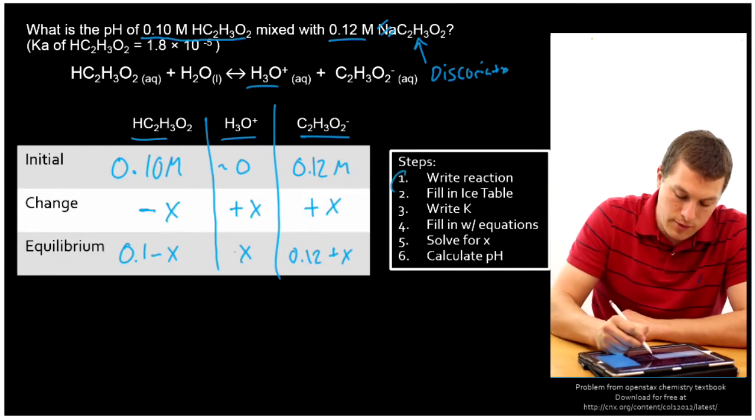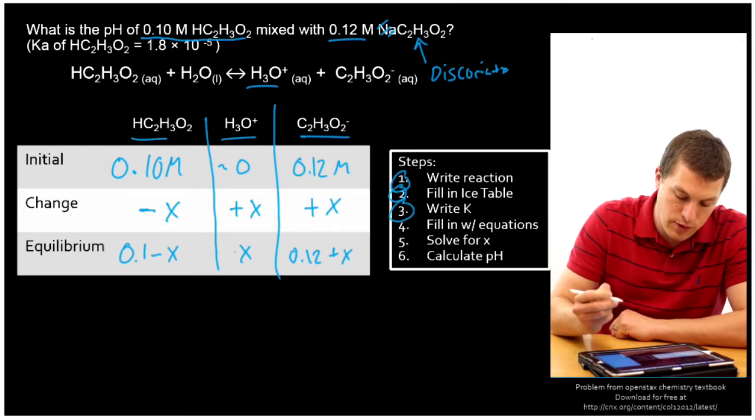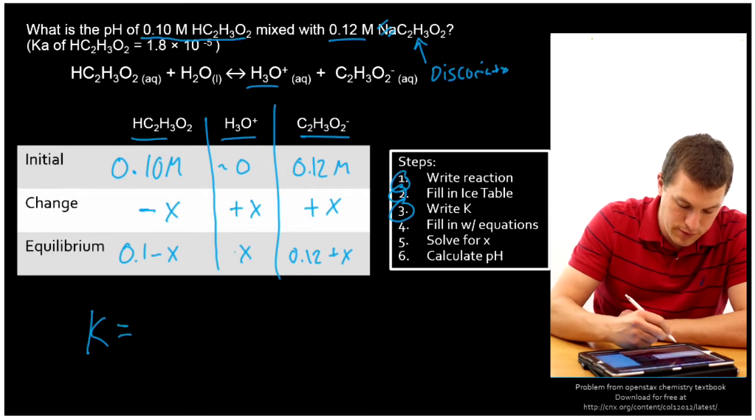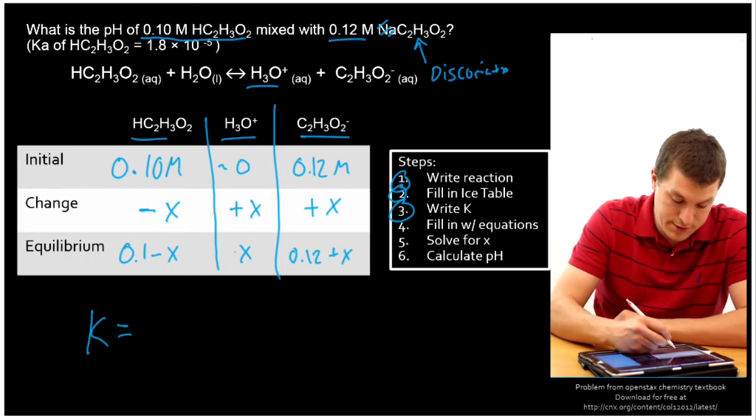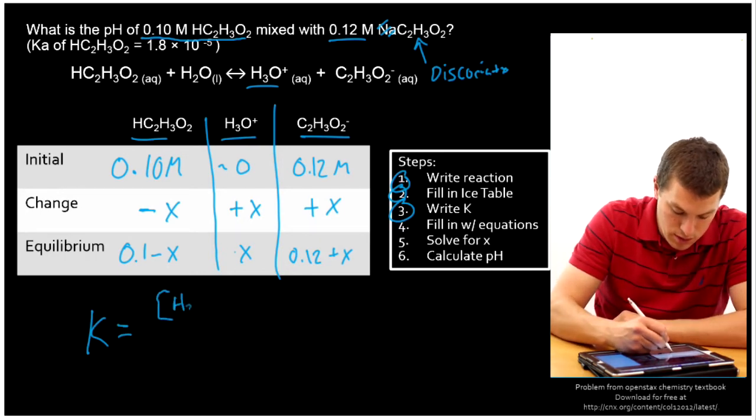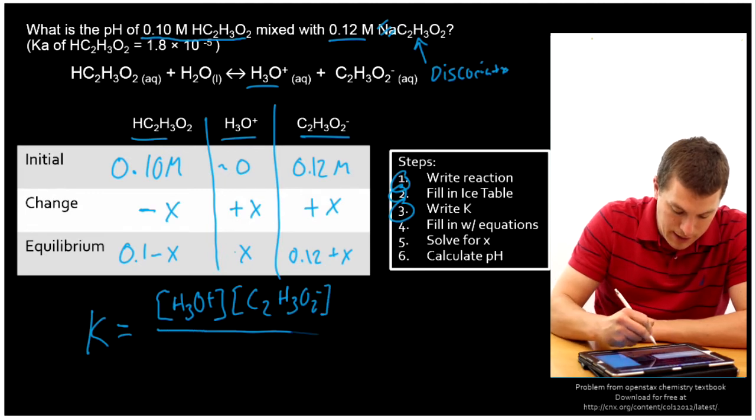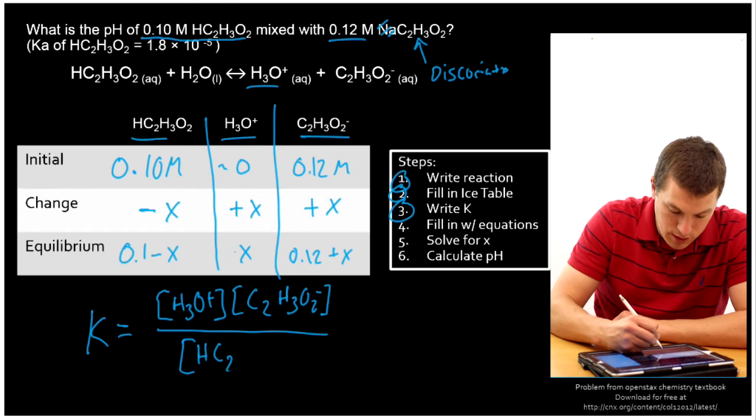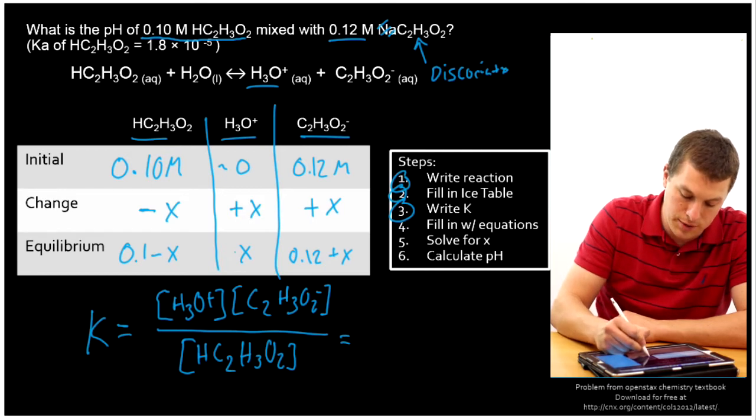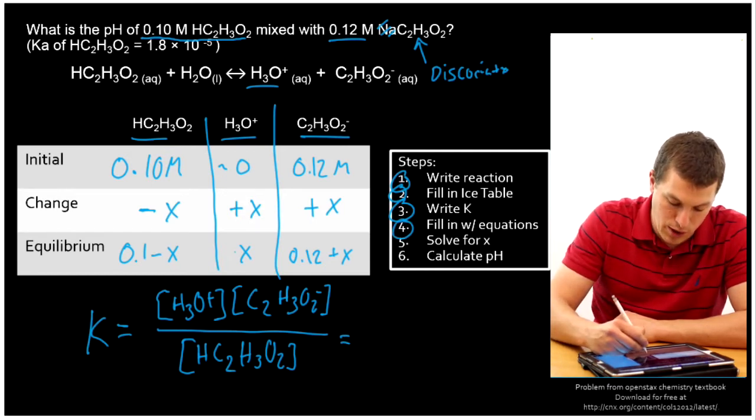So I've written the reaction, I've filled an ICE table, and now I need to write my expression for K. Well, K is always equal to products over reactants. In this case, my products are H3O+ times my acetate ion, all divided by my acetic acid, which I just got as my only reactant. I've dropped water once again because it's a liquid. And now all I'm going to do is I'm going to fill it in with my equations for my ICE table.